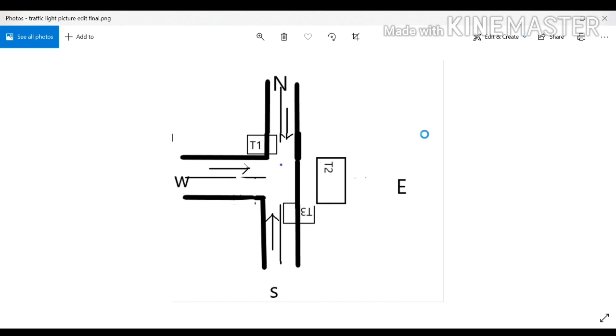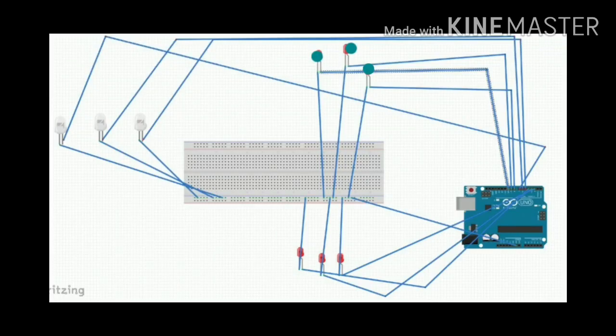Now I will show you my circuit diagram. At the bottom you can see three red LEDs, towards the left three blue LEDs, and towards the top three green LEDs. The three red LEDs are connected to pin numbers 3, 2, and 4 of the Arduino. The three blue LEDs are connected to pins 5, 6, and 7, and the three green LEDs are connected to pins 8, 9, and 10. All LEDs are connected to the ground pin of the Arduino through the breadboard.